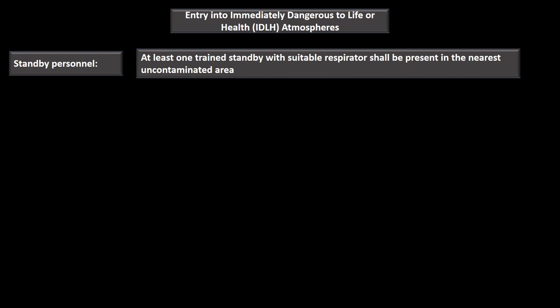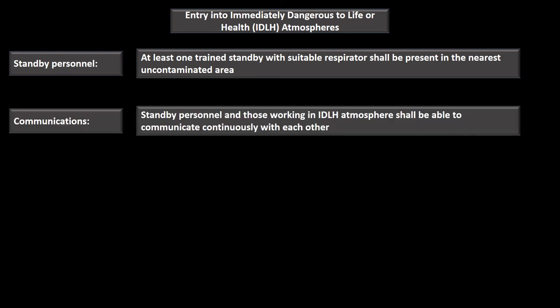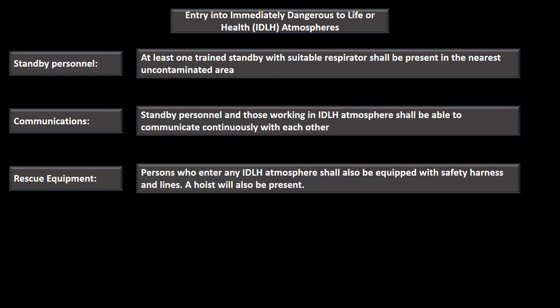For IDLH atmosphere entry, at least one trained standby with a suitable respirator must be present in the nearest uncontaminated area. Before that standby enters, another standby must be in place. Standby personnel and workers in the IDLH atmosphere must communicate continuously, and persons entering must be equipped with a safety harness, lines, and a hoist.